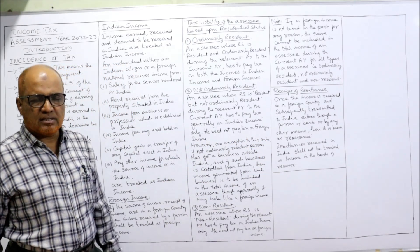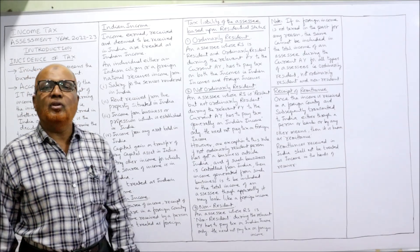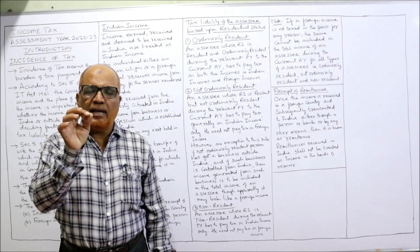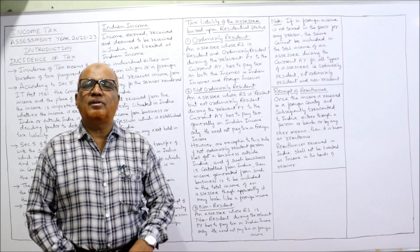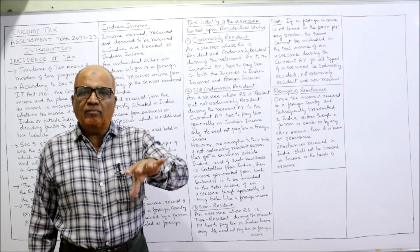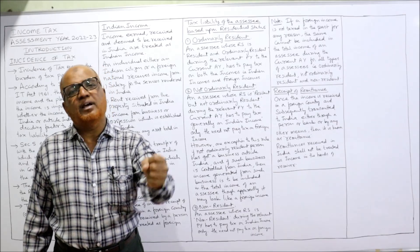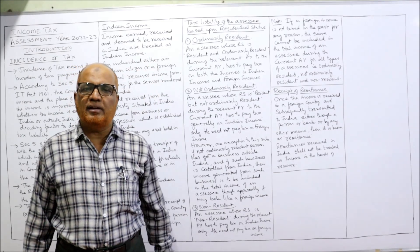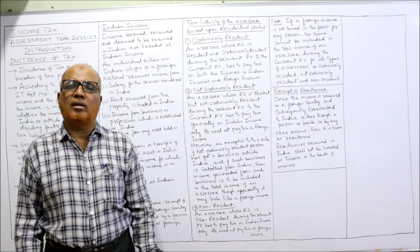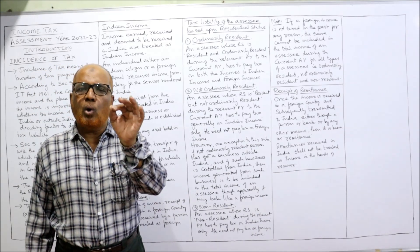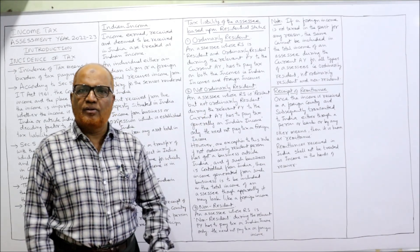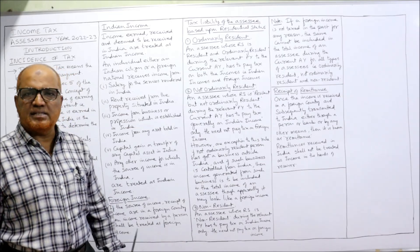For a non-resident person, only and only Indian income is taxable. Foreign income is completely exempted — even if he has a business outside India which is controlled from India, that income is also not taxable in India because his status is non-resident. Simply, only Indian income is taxable and foreign income is completely exempted for a non-resident person.